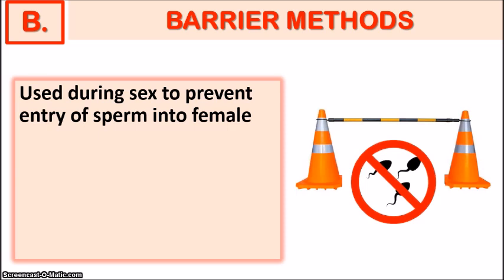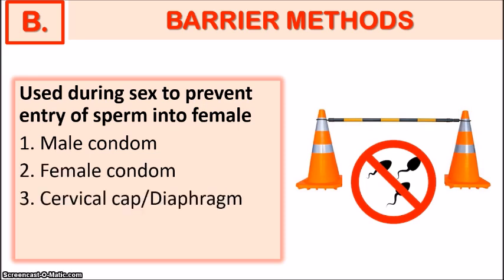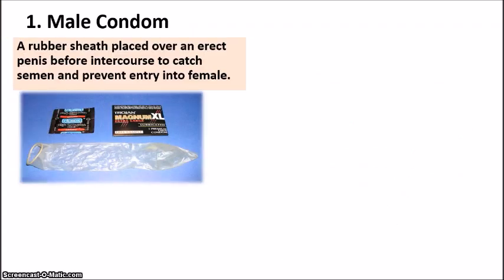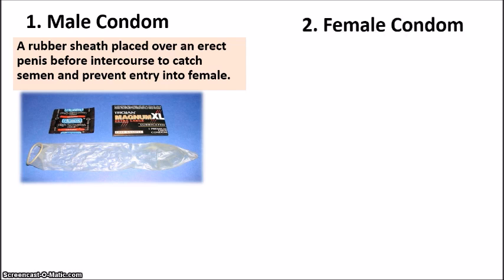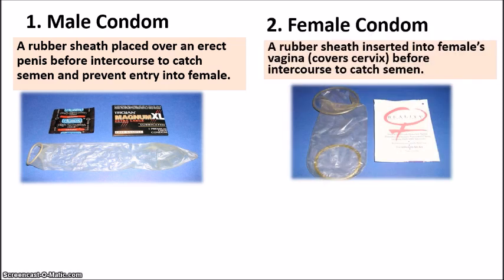Moving on to barrier methods — as the name implies, these are used during sex to prevent or bar off the entry of sperm into the female reproductive system. These include the common male condom, the less common female condom, and the cervical cap, also known as the diaphragm. The male condom is the most popular form of birth control — a rubber sheath placed over an erect penis before intercourse to catch the semen and prevent entry into the female.